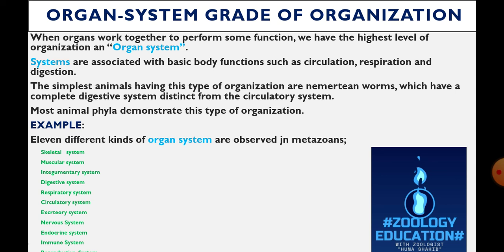The eleven organ systems are: skeletal system, muscular system, integumentary system, digestive system, respiratory system, circulatory system, excretory system, nervous system, endocrine system, immune system, and the reproductive system.